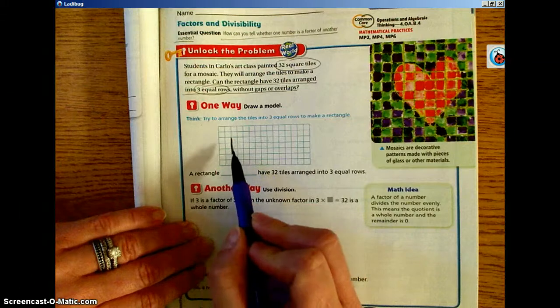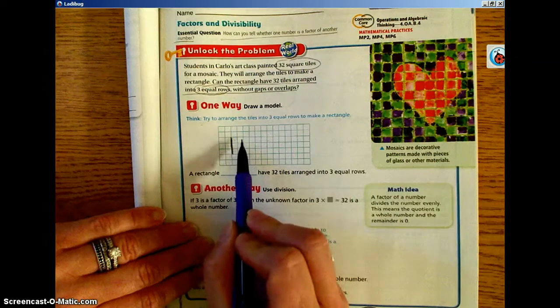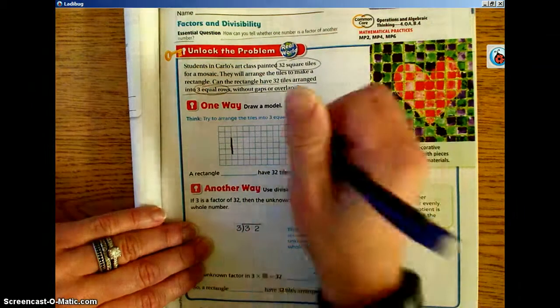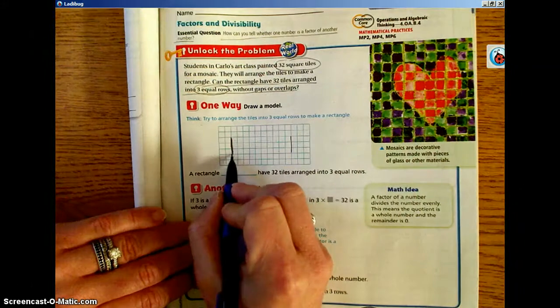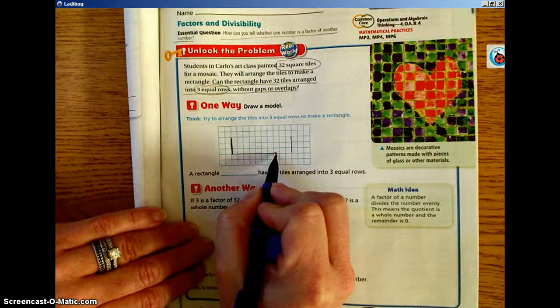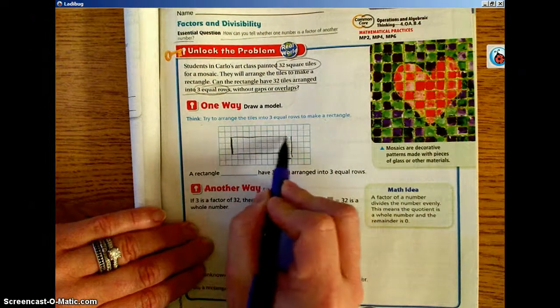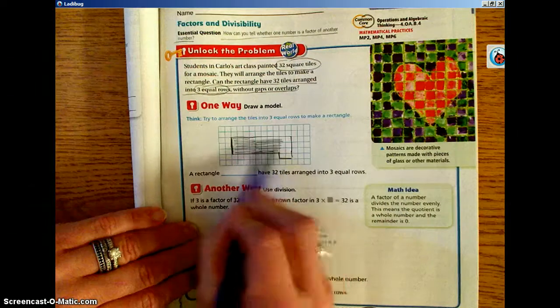We have 3 rows: 1, 2, 3, 4, 5, 6, 7, 8, 9, 10. That's going to be 30. But then we're going to have 2 additional tiles to get us the 32. So our shape is not going to be a rectangle.